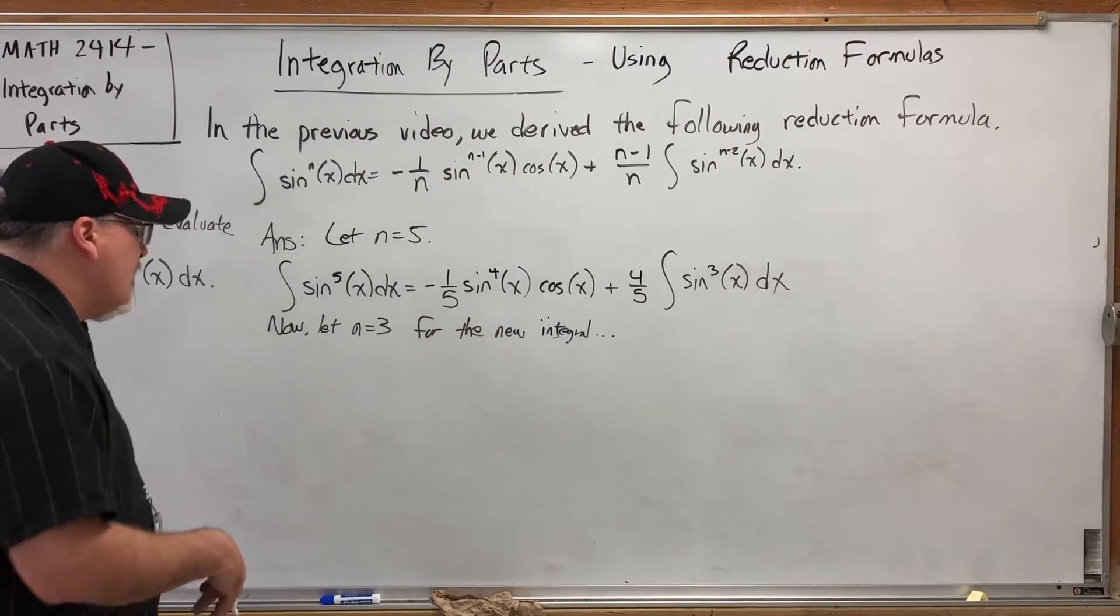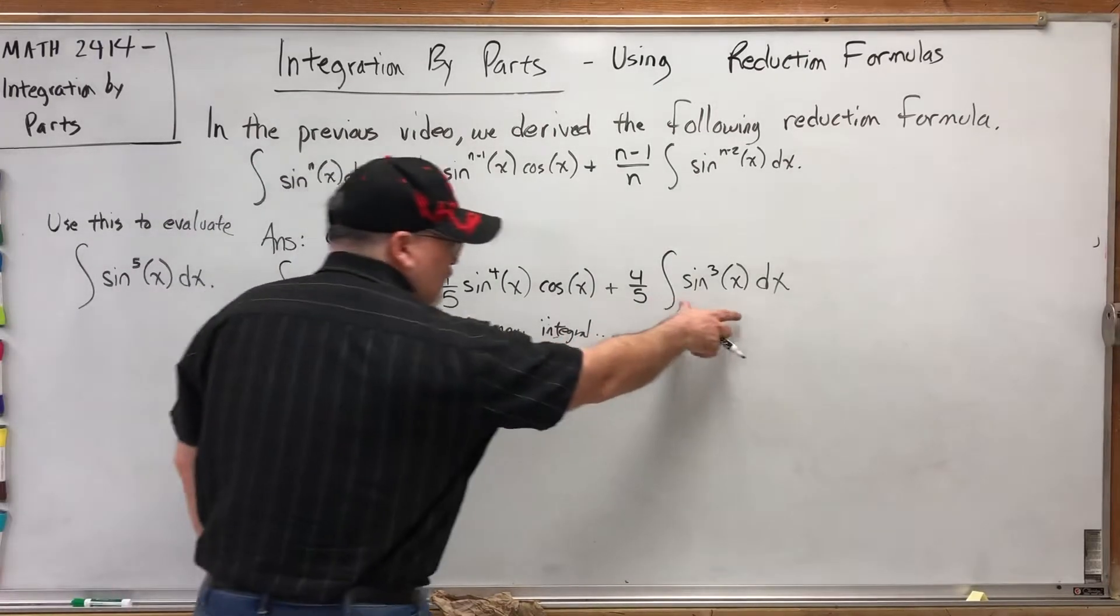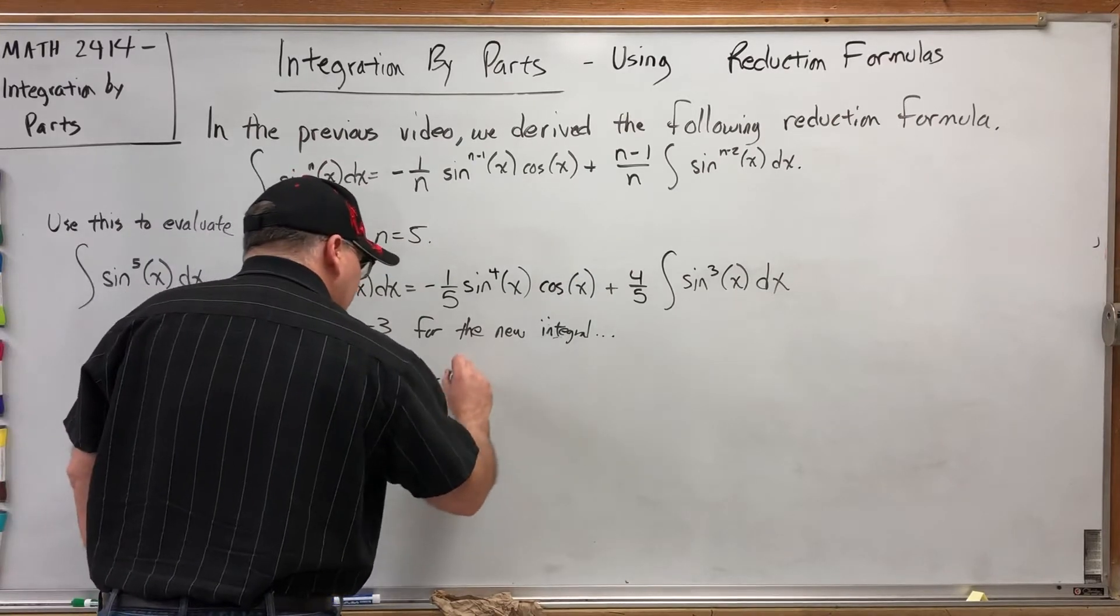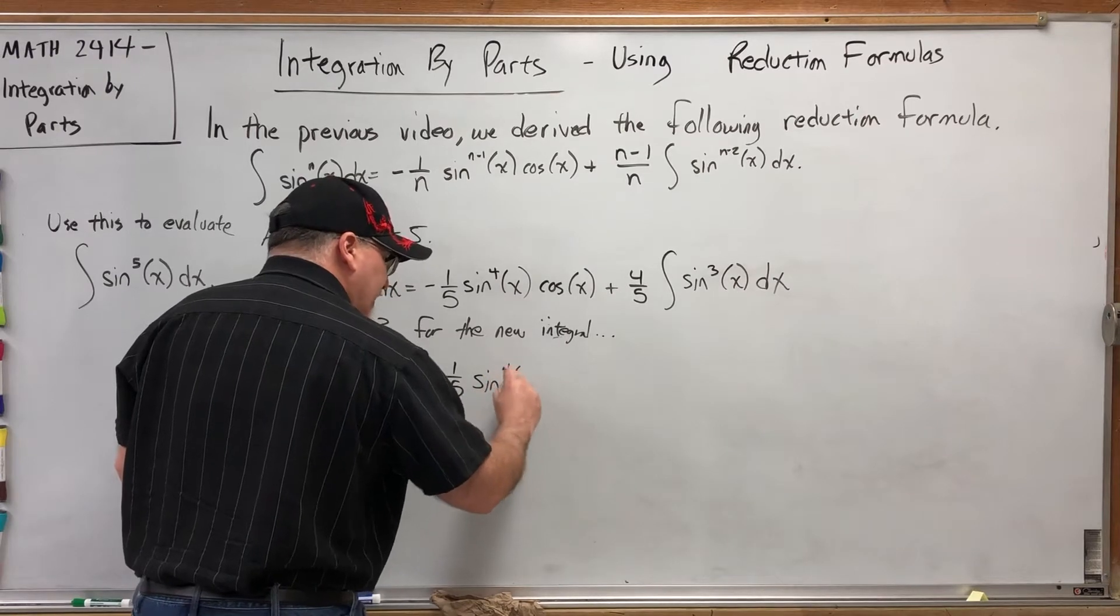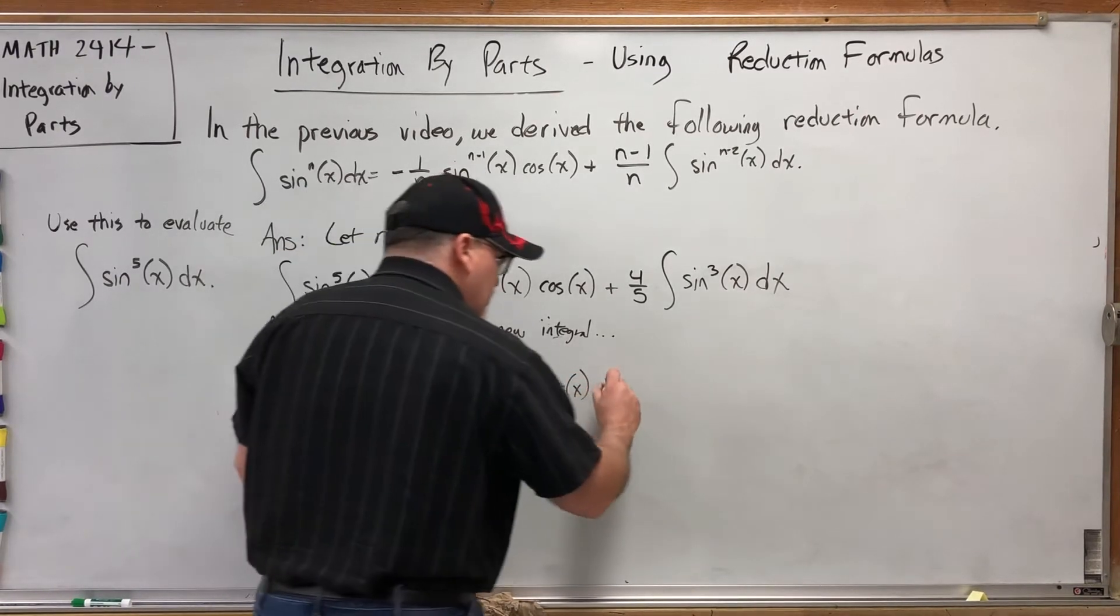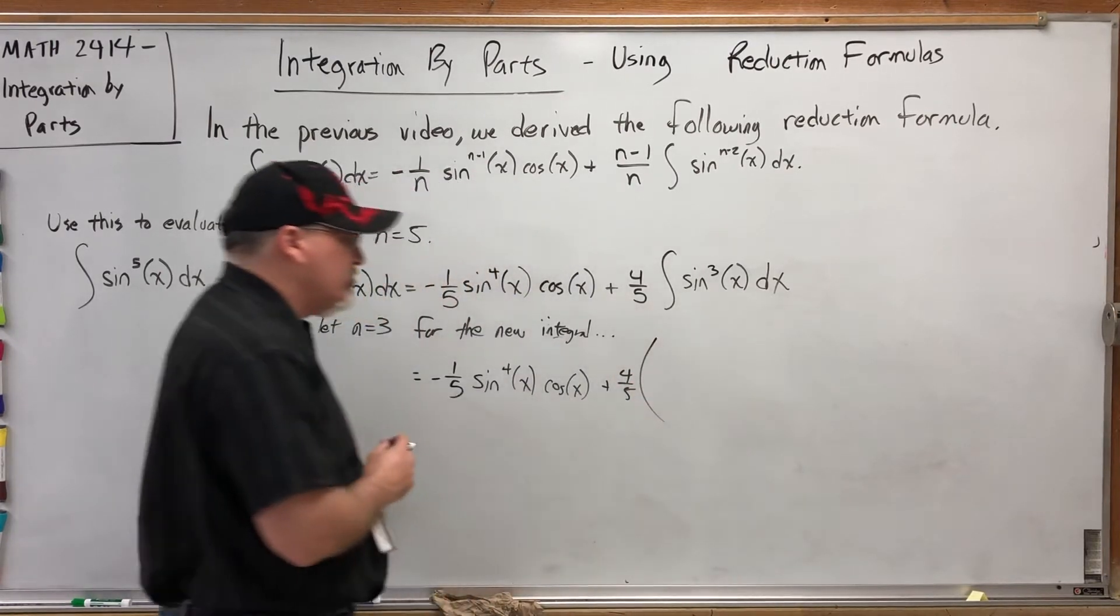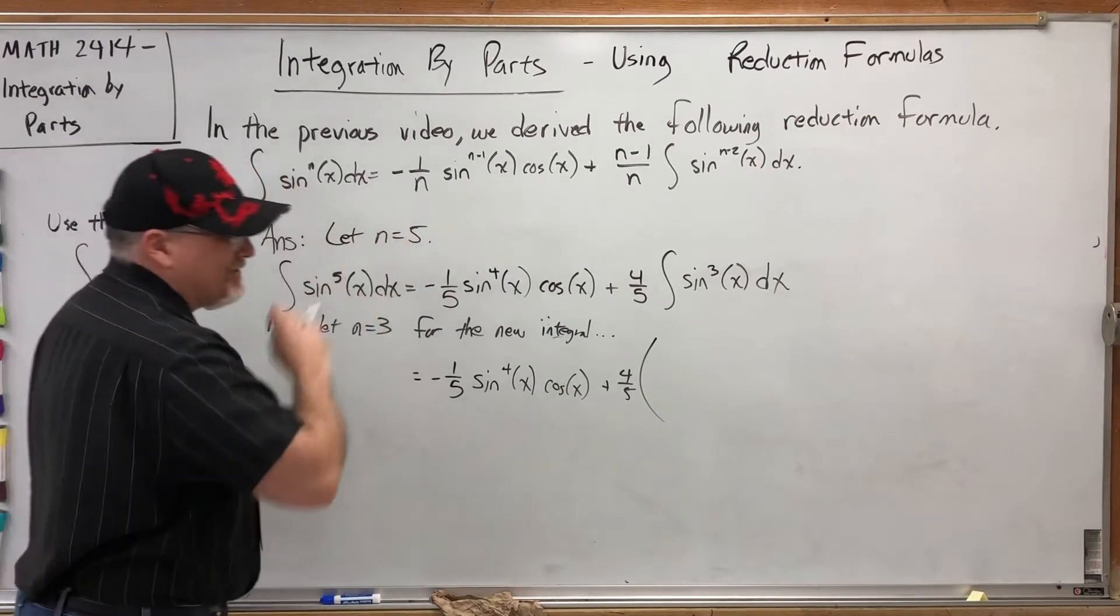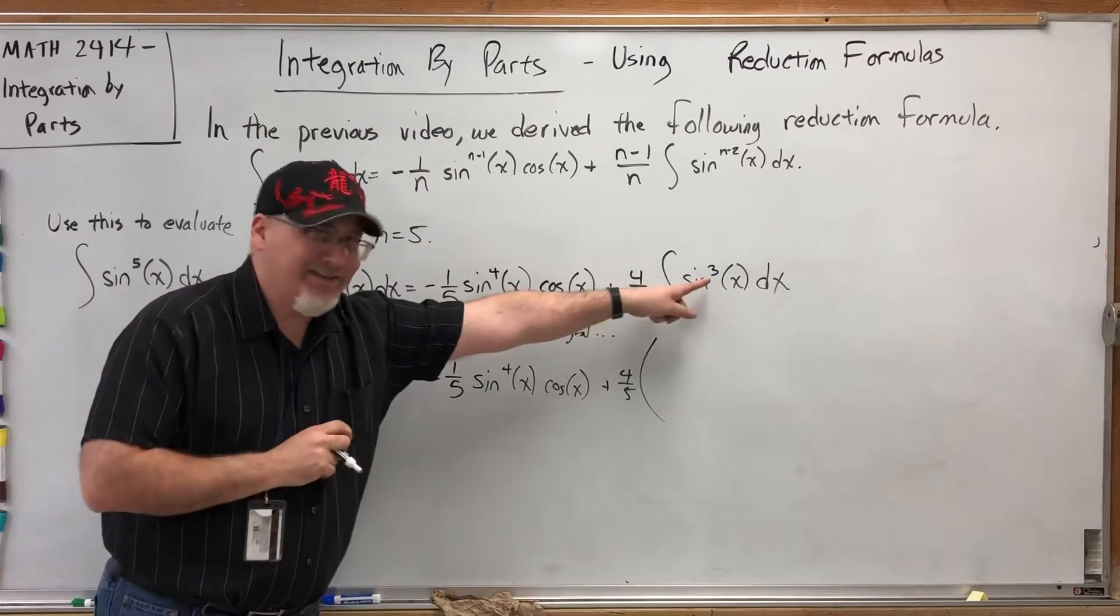Previously when we did integration by parts multiple times, we did the second one separately and then imported it into the current results. But this time I want to see if we can actually do this problem while it's buried inside of this answer. Let's write down everything besides the integral. Negative one-fifth sine to the fourth power of x cosine of x plus four-fifths. And now let's open up a tall set of parentheses and apply the reduction formula to sine to the third.